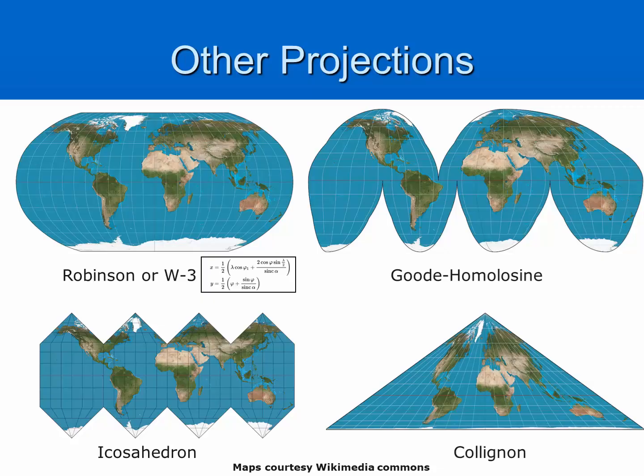There are numerous other types of projections. This selection here just shows you several. Various map projection methods are attempts to show the earth in such a way where there are fewer distortions. Keep in mind, many of these are actually derived from complex mathematical algorithms to figure out how to take the three-dimensional surface of the earth and project it onto a flat piece of paper. Some of these are far more useful than others.